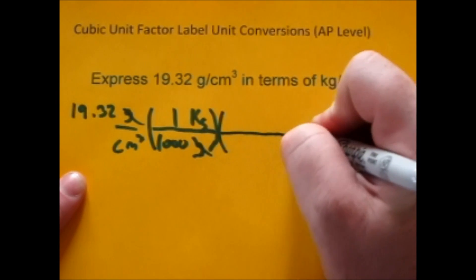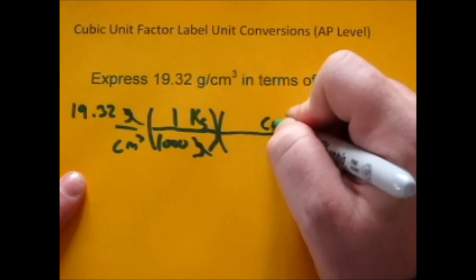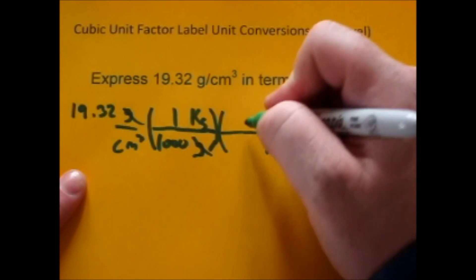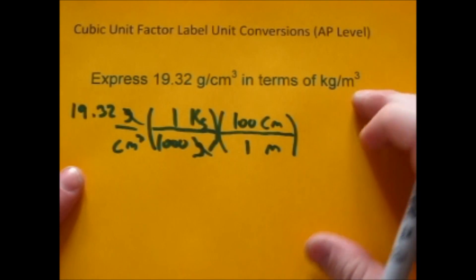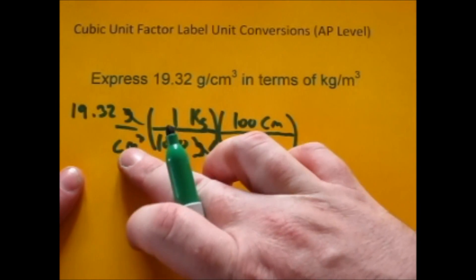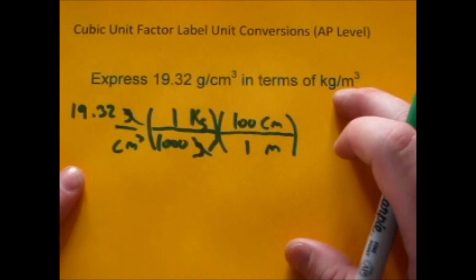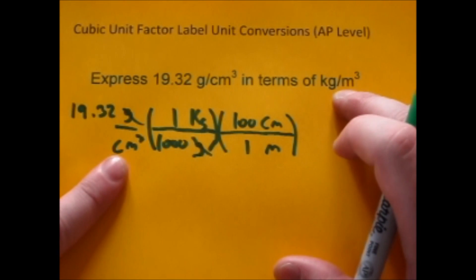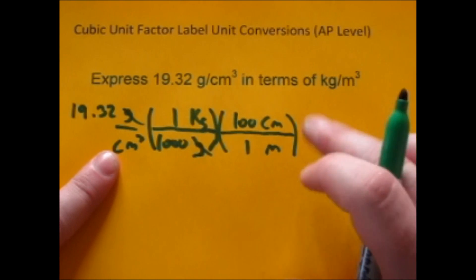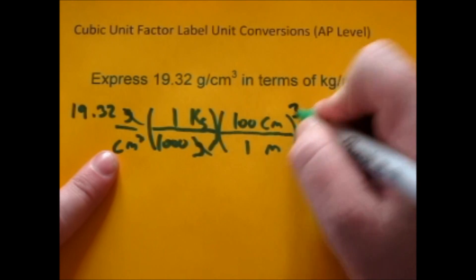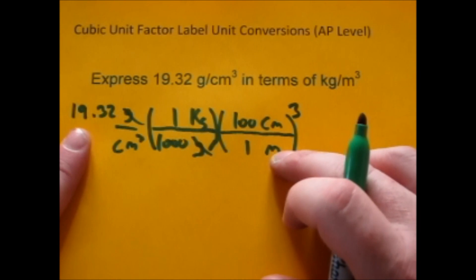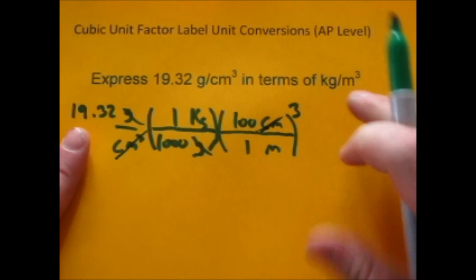Now I'm going to get rid of the cubic centimeters. When you convert cubic centimeters to cubic meters, the conversion factor for centimeters to meters is 100 centimeters in one meter. However, because it's a cubic unit, dividing by cubic centimeters only takes out one of the three units — you'd end up with kilograms over centimeters squared. So you have to apply this conversion factor three times, or just cube the whole factor. That cubes both the centimeters and the meters, which takes care of the centimeters cubed.